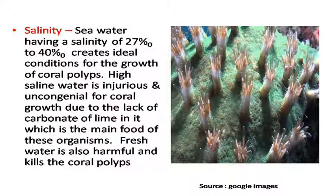Salinity: Seawater having a salinity of 27 per thousand to 40 per thousand creates ideal conditions for the growth of coral polyps. High saline water is injurious and uncongenial for coral growth due to the lack of carbonate of lime in it, which is the main food of these organisms. Fresh water is also harmful and kills the coral polyps.